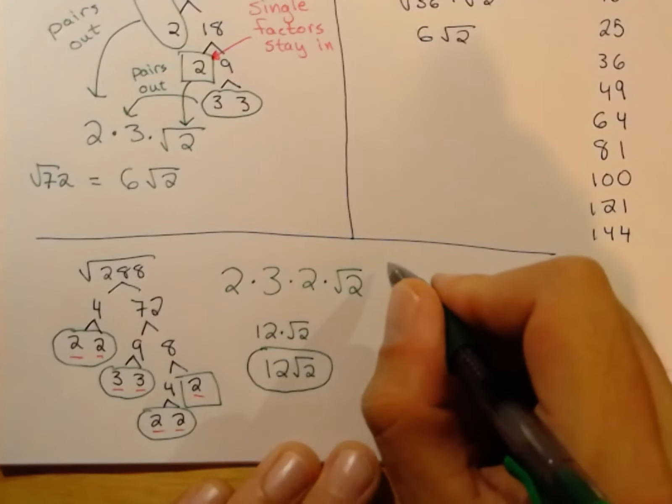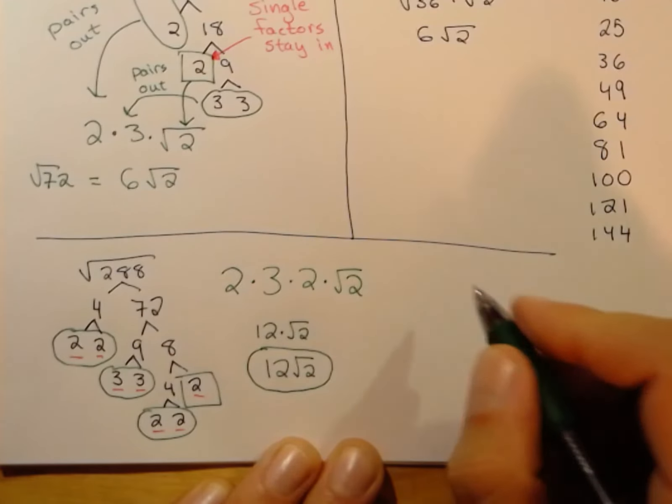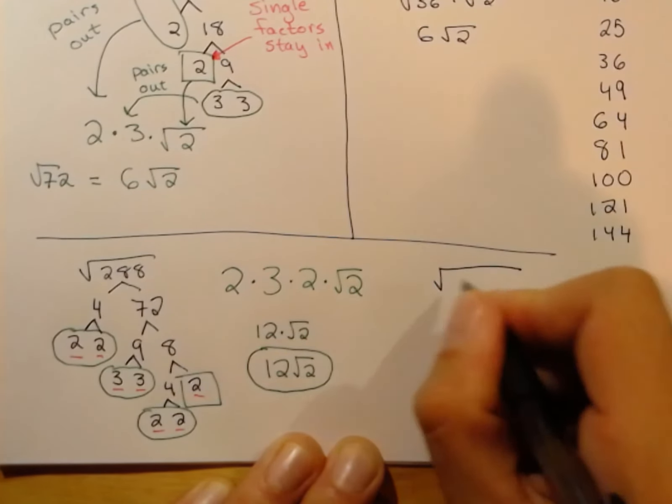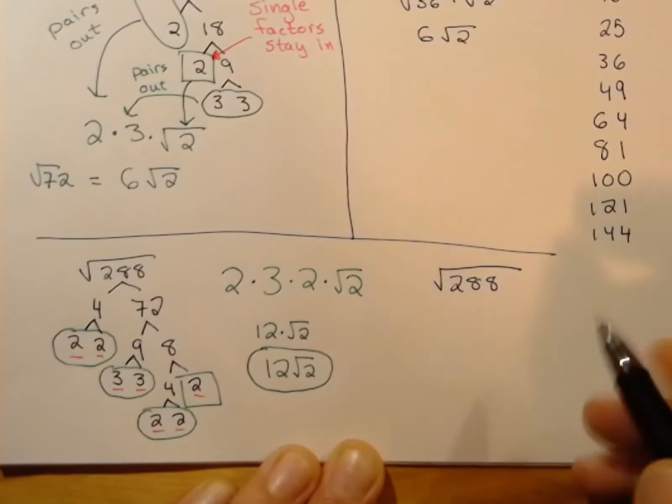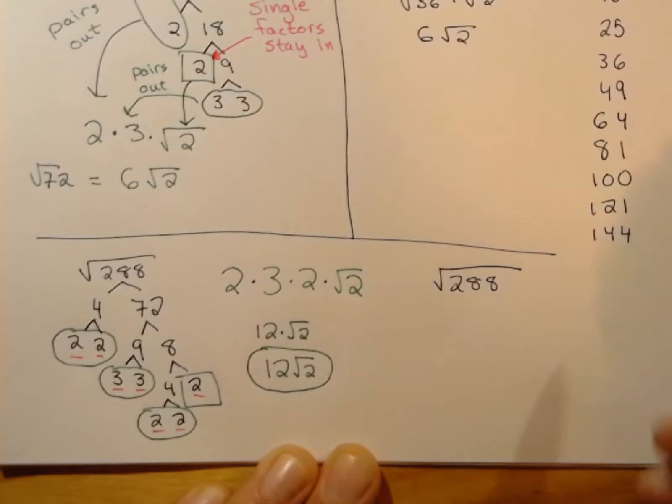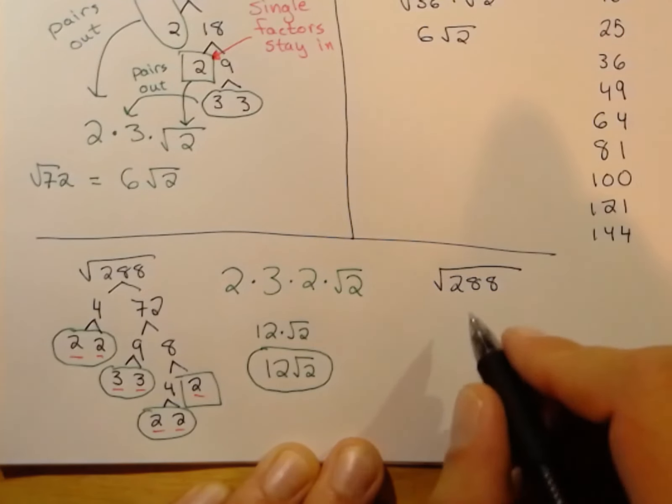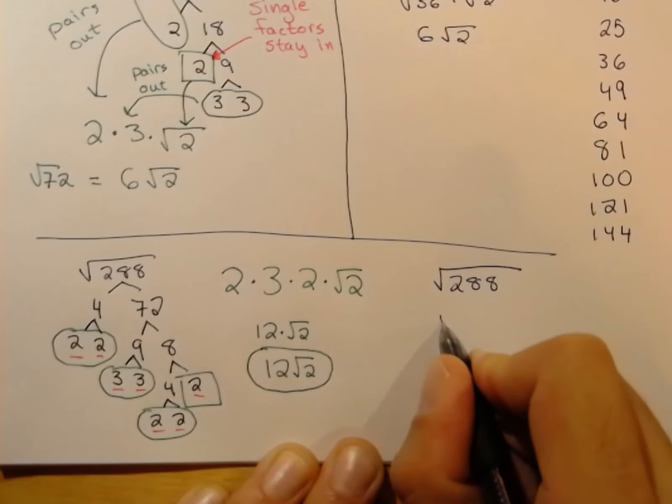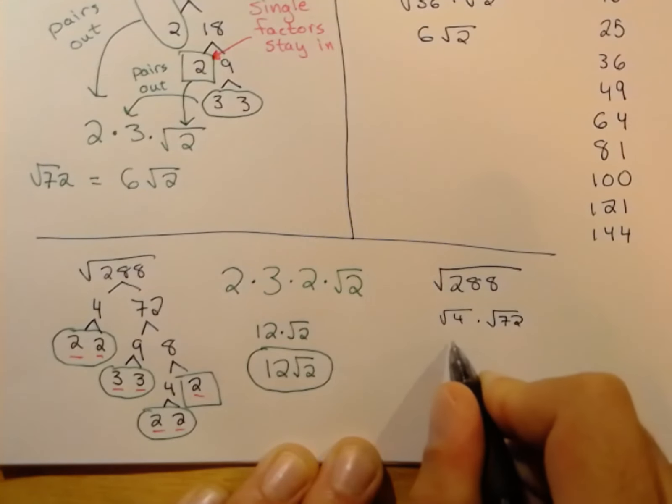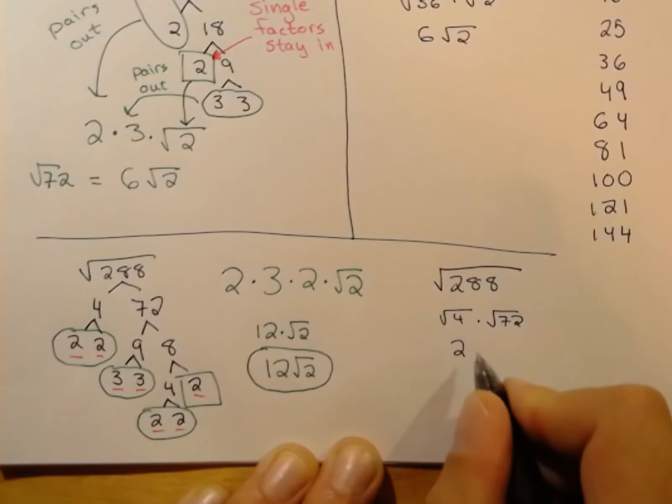Very quick to show you, if you don't guess the largest factor on the first try, it doesn't matter. You can keep plugging away. So 288 is 2 times 144. But if you didn't recognize 144, you might recognize that 4 is a perfect square. So √4 times √72. Well, 4 is really, the square root of 4 is 2.